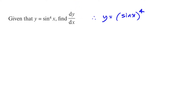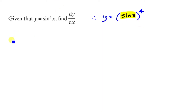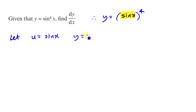The trick is that because you've got something wrapped in a bracket with a high power, you always want to let the inside bit be u. So we let u equal sin x, and therefore y becomes y equals u to the power of 4, because you've called all of that u.